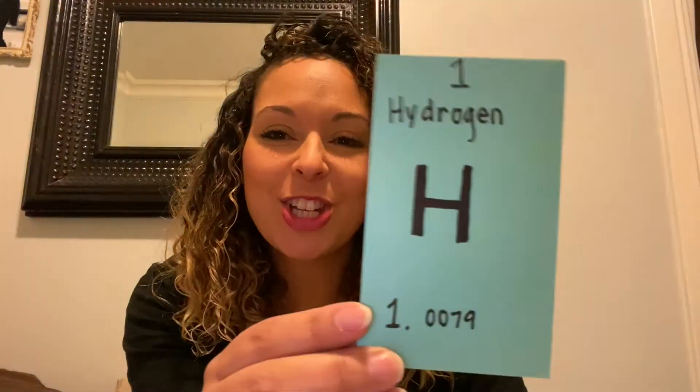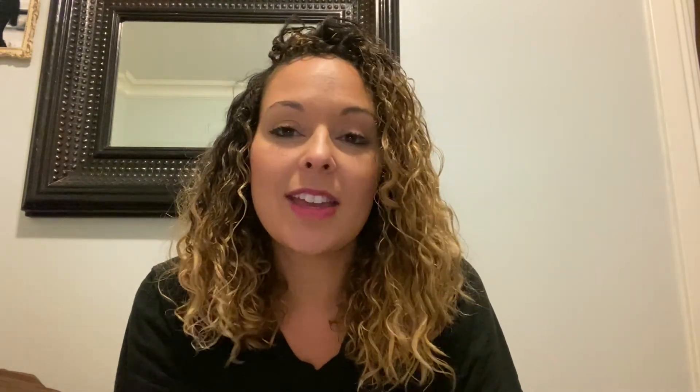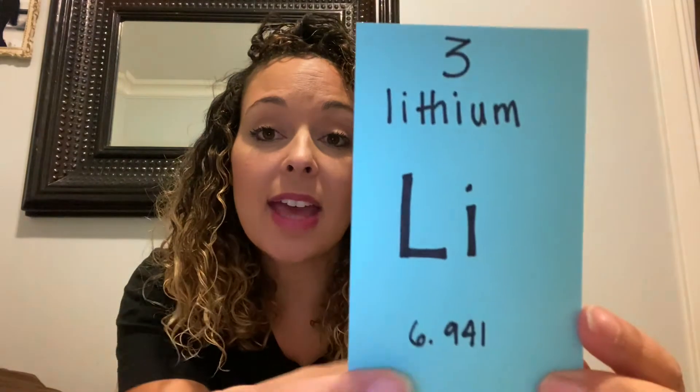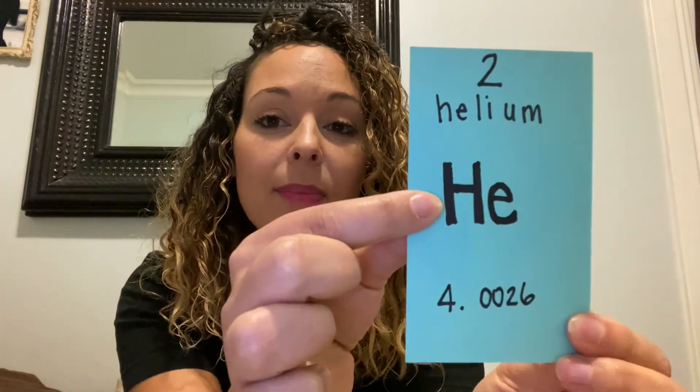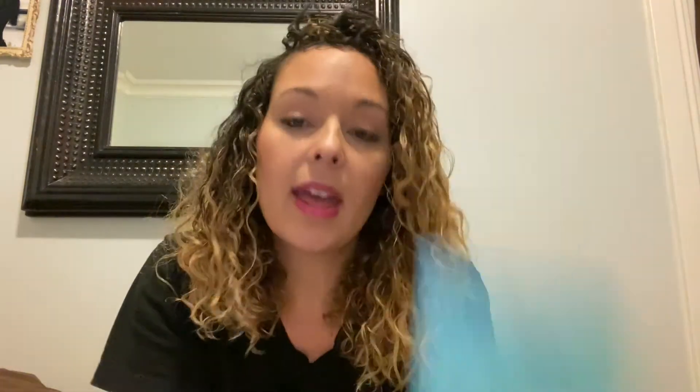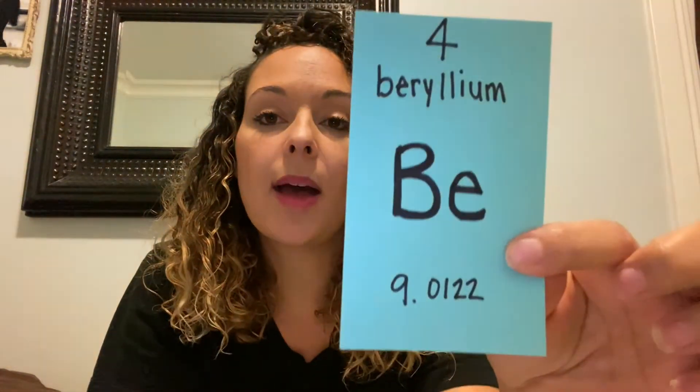What are the first four elements in the periodic table? By number, element, symbol, and by mass: one hydrogen H1, two helium HE4, three lithium Li7, four beryllium BE9. And that is our science.